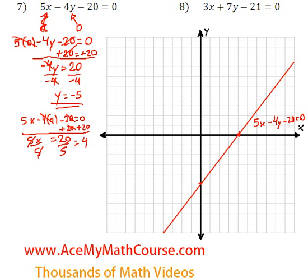How about question 8? So 3x plus 7y minus 21 equals 0. Now let's determine the y-intercept first. I'll plug in 0 for x. So 3 times 0 plus 7y minus 21 equals 0. 3 times 0 is 0. And I can add 21 to both sides of the equation. So 7y equals 0 plus 21, 21. Then I can divide both sides by 7. So y is equal to 21 over 7, which is just 3. So that is the y-intercept.